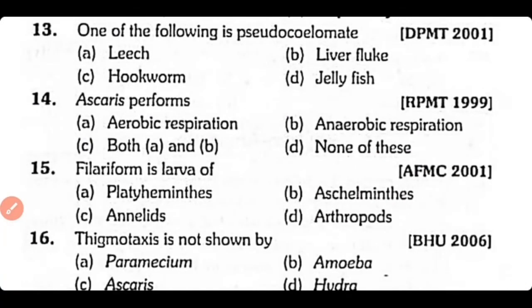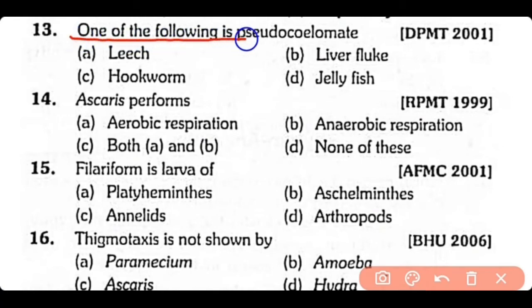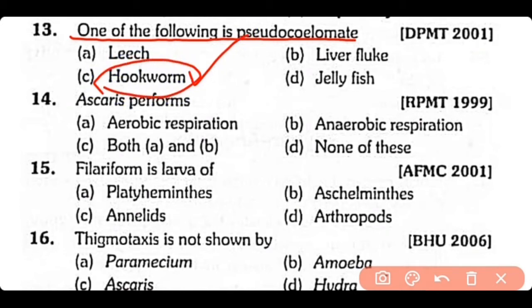Question 13: One of the following is pseudocoelomate: (A) leech, (B) liver fluke, (C) hookworm, (D) jellyfish. The correct answer is Option C. Hookworm, or Ancylostoma, is a pseudocoelomate.